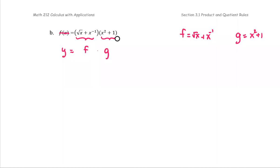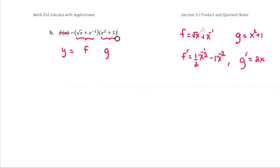Recall we have the power rule. So whatever we have as a radical, we're going to change into the power. Square root x is the same as x to the power one half. We can go ahead and find the derivative of f using the power rule. The first term will get one half x to the power negative one half. The second term will be negative one x to the power negative second. And for g prime, the derivative is going to be 2x plus zero, or just 2x.